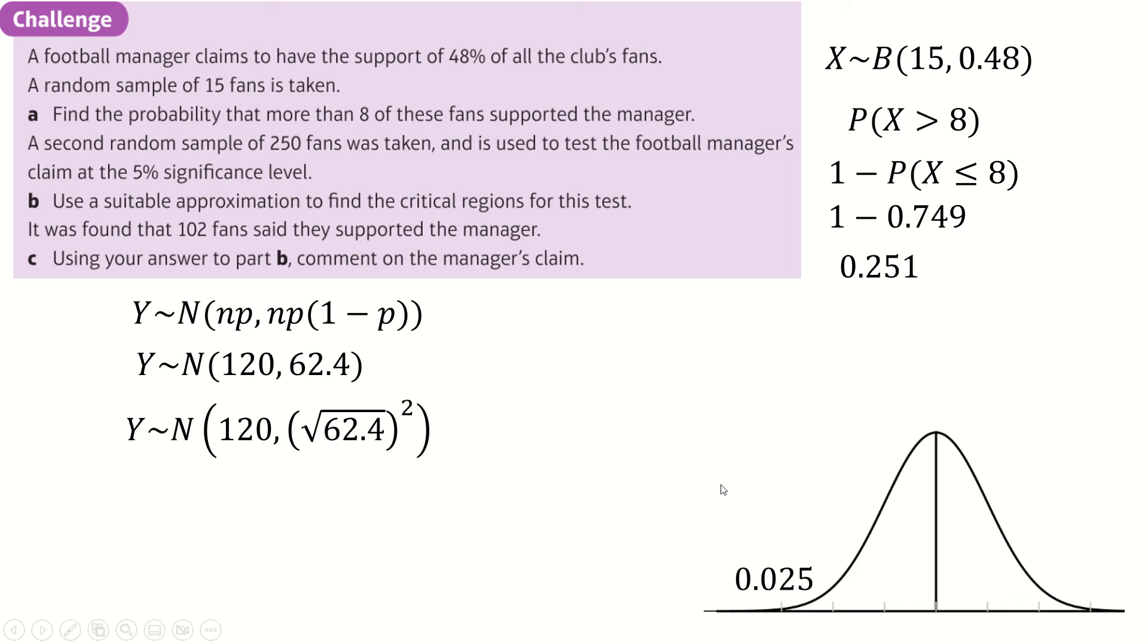I'm looking for area 0.025 behind because this is a two-tailed test. So 0.025 behind gets you this number. And then you can do the one above, or you can just find the difference between that and 120 and then just go above it. It's kind of up to you to get this. So, of course, that means the critical value is anything less than or equal to 104 and anything greater than or equal to 136. 102 is inside that critical region. So the manager is wrong.